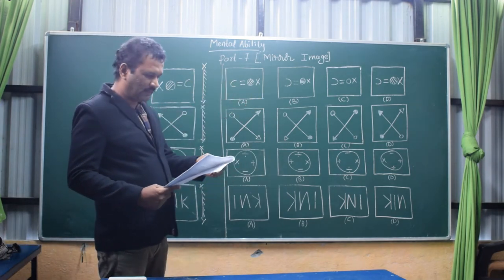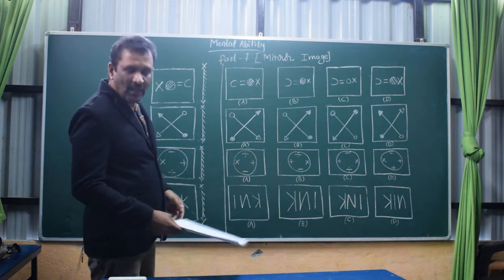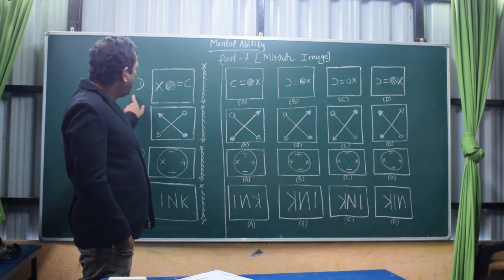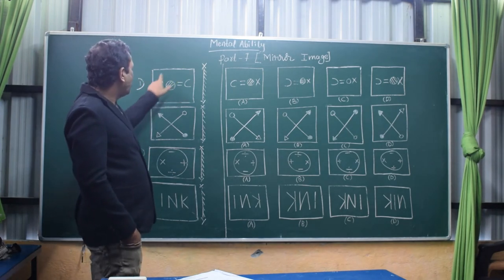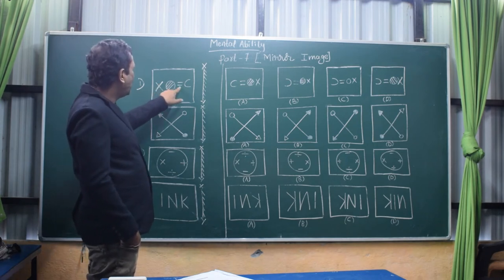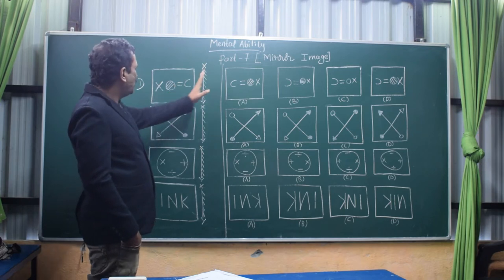XY is the mirror. If we keep the mirror here, how will it look? That will be the answer. We have to select that answer. Indicate your answer by darkening the circle as usual. Let me start.